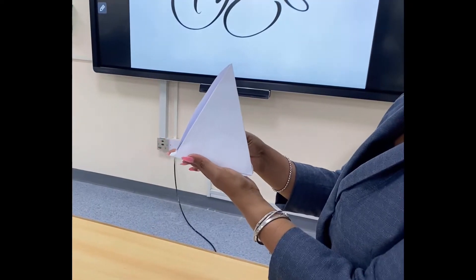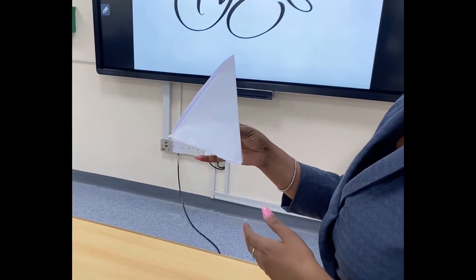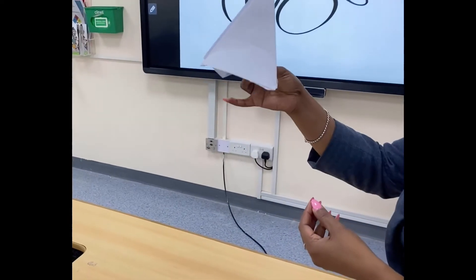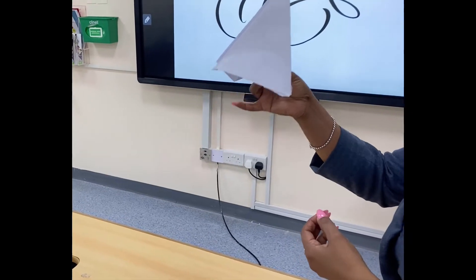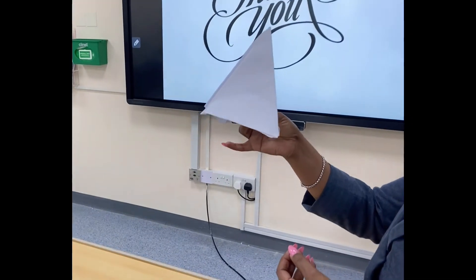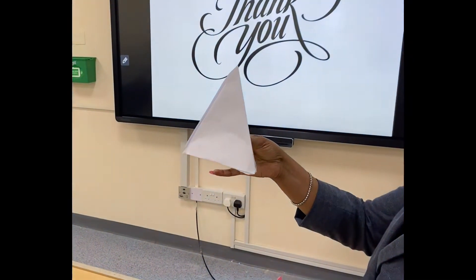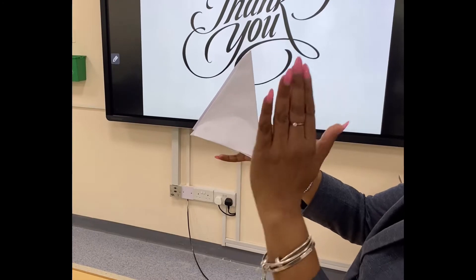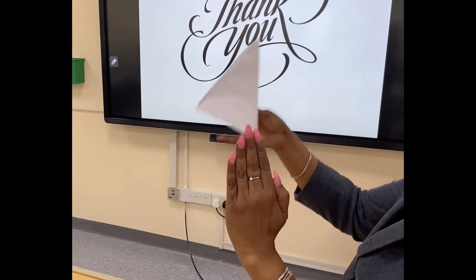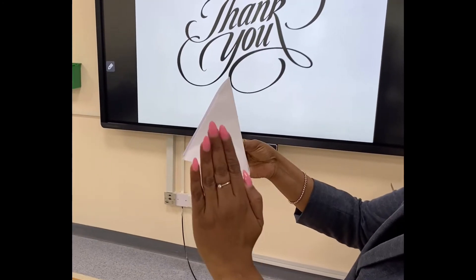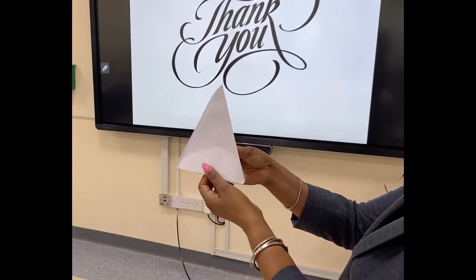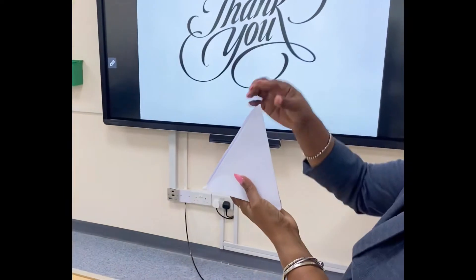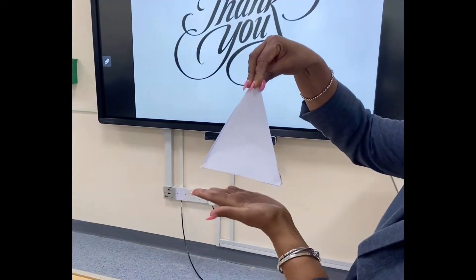Good morning guys. Let me explain the thyroid gland with the help of this paper model. This is one lobe of the thyroid gland. There are two lobes — the right and the left lobe. This is the apex and this is the base.